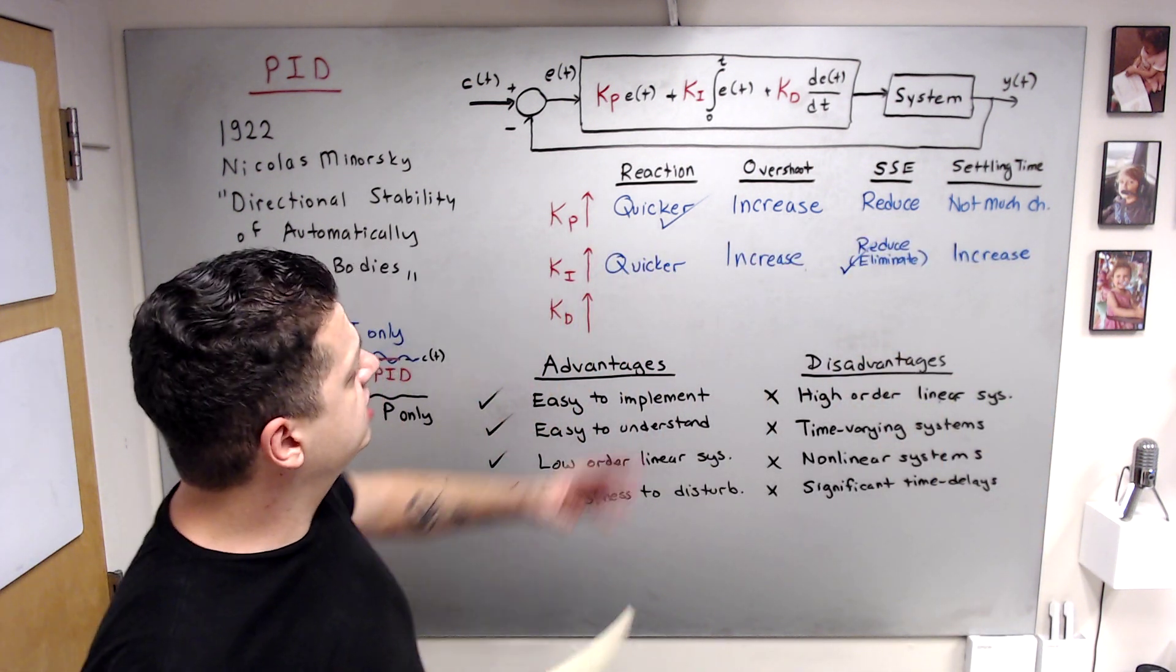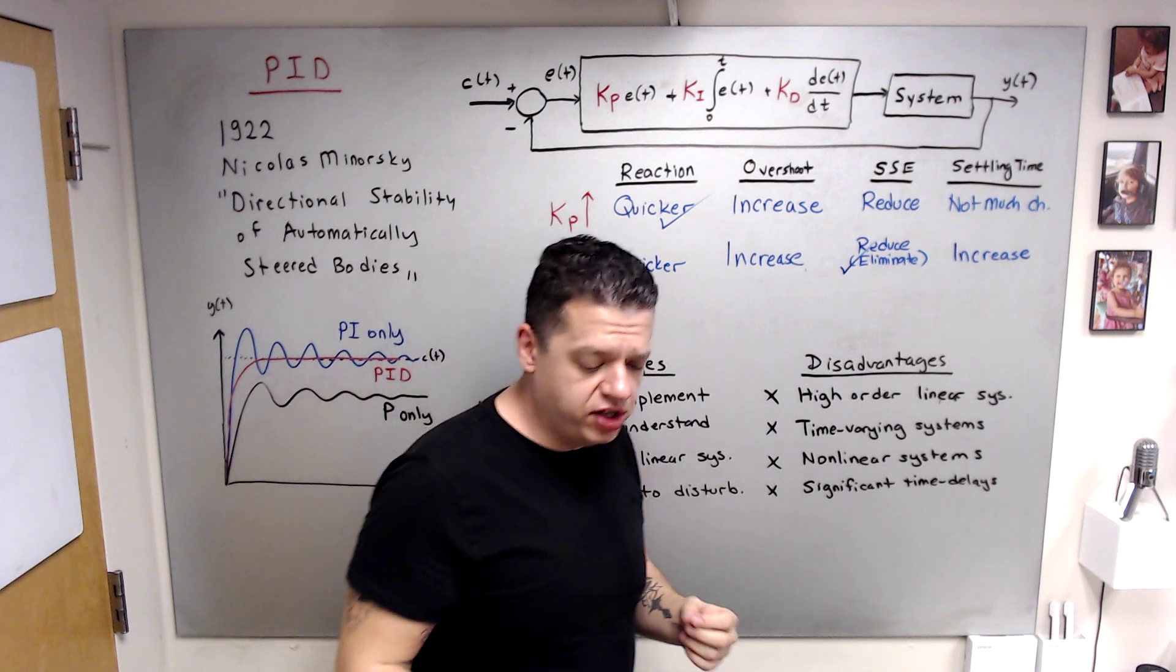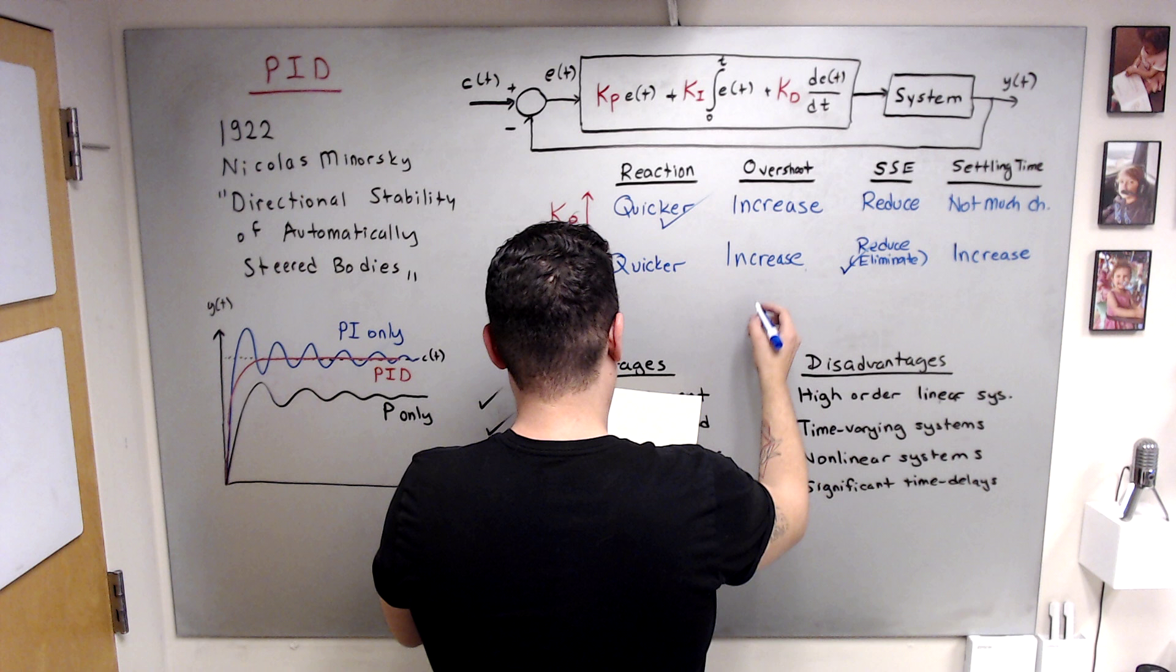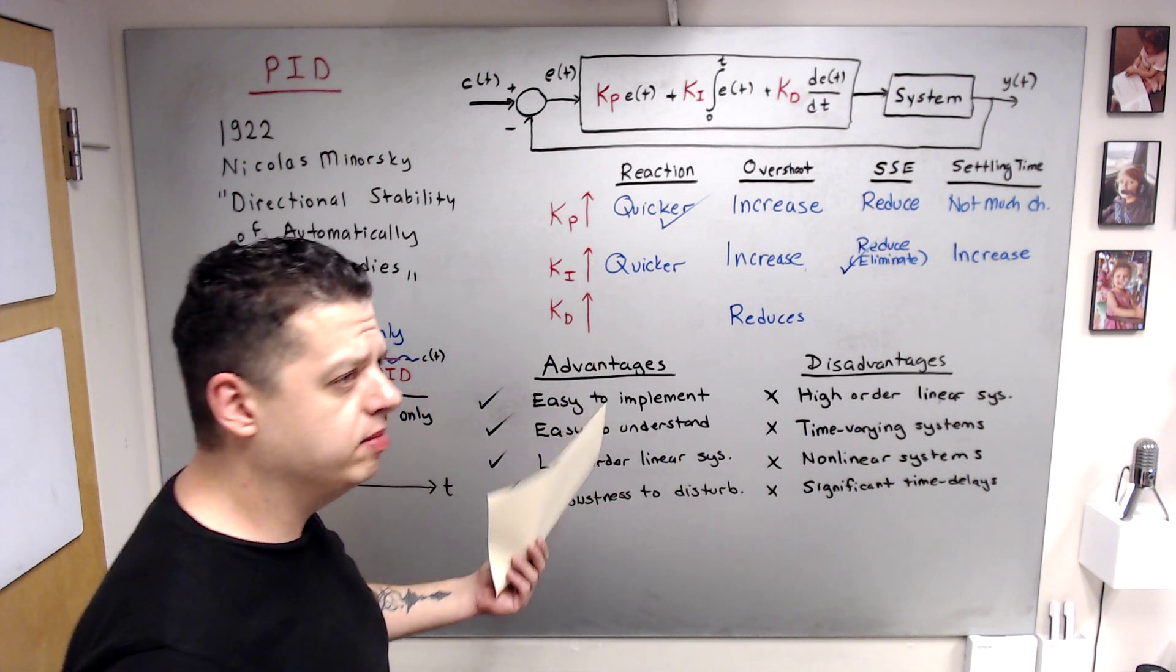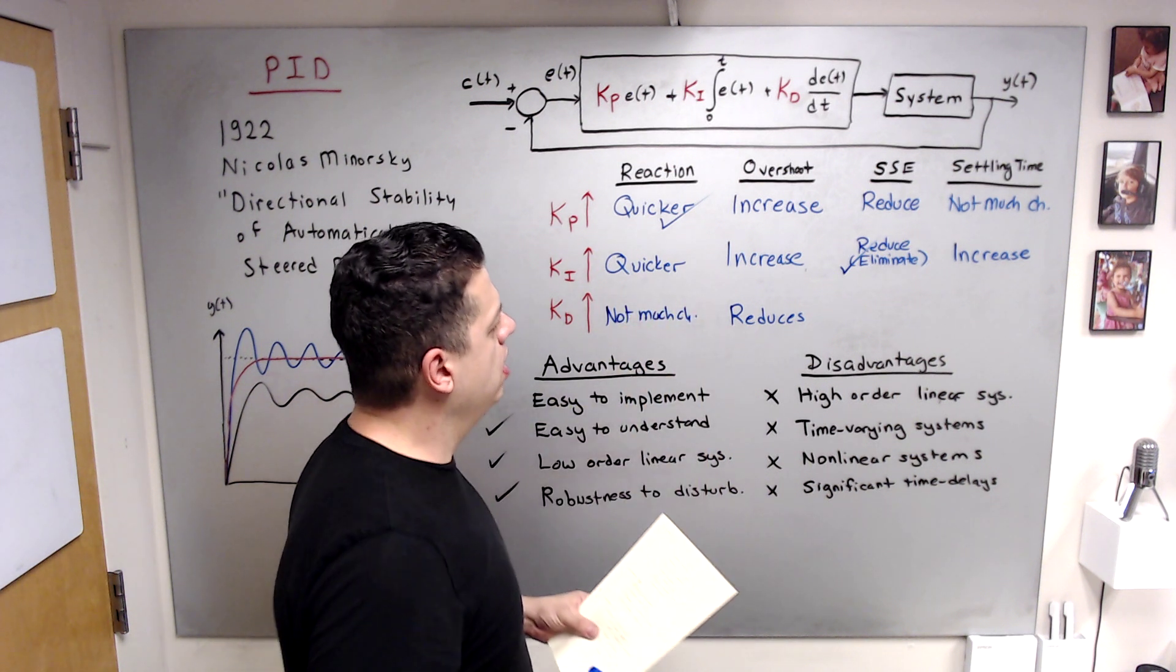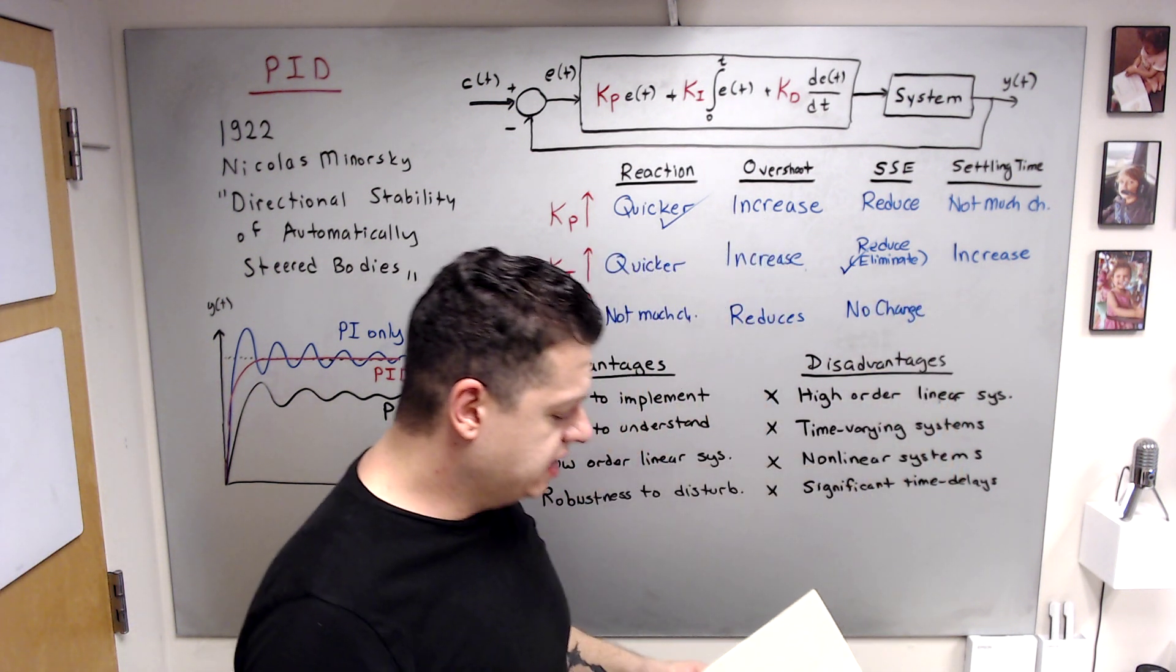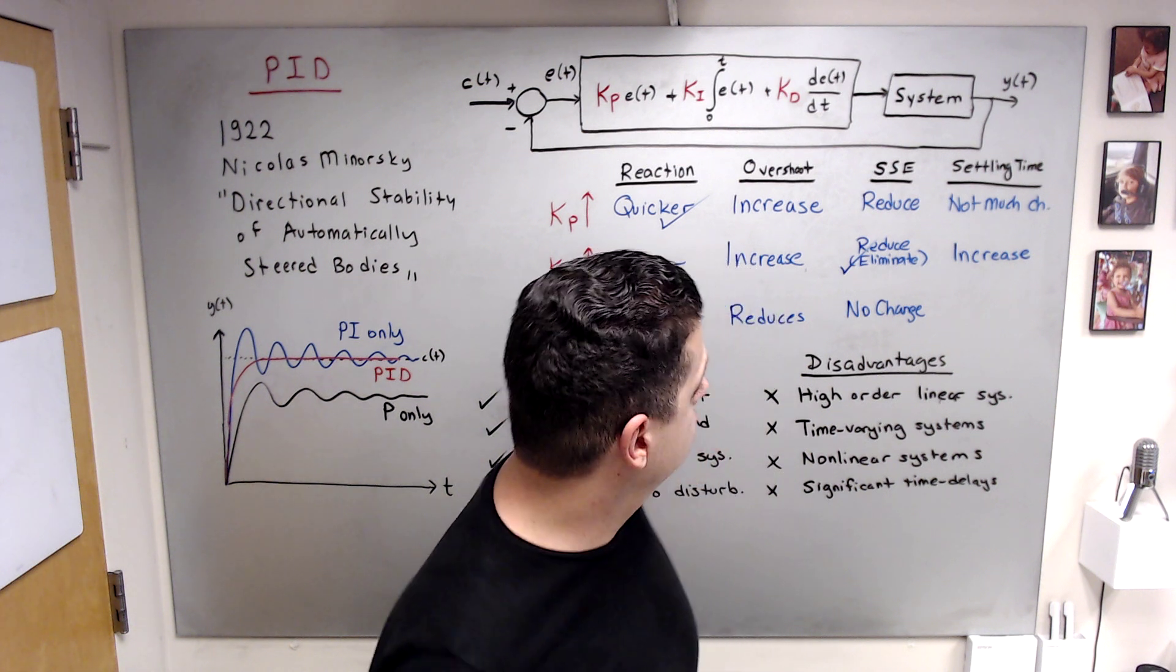And the Kd term, Kd is like, since you are taking the derivative, the slope, it is kind of prediction of the future error. Because of this feature, derivative term adds damping to the system, and this damping decreases the overshoot and reduces oscillations. Does not much change the reaction time. Steady state error does not change much, actually almost no change. Settling time, since it kills the oscillations, it also reduces the settling time.